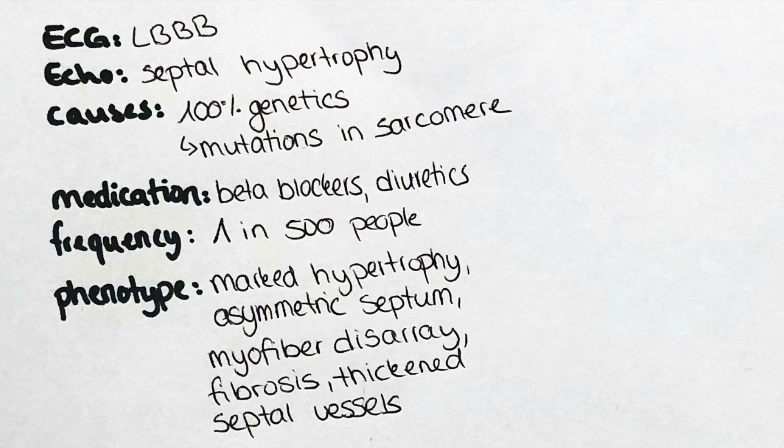These mutations lead to a defect in force generation and therefore to a sudden stop of function of the heart. The ECG presents with left bundle branch block and the echocardiography with septal hypertrophy with a wall thickness of over 13 mm. This wall thickness can be asymmetrical. This type of cardiomyopathy occurs in approximately one out of 500 people, so it is more frequent than dilated cardiomyopathy.